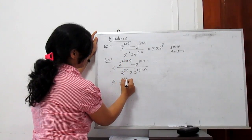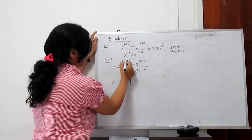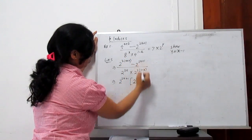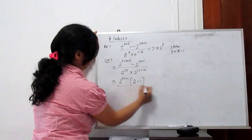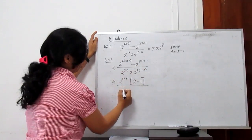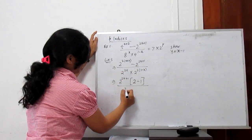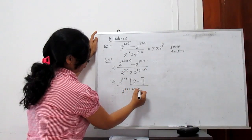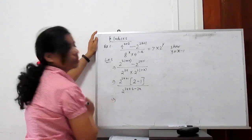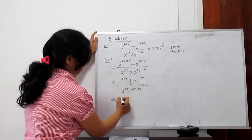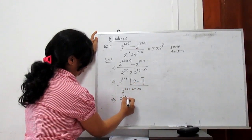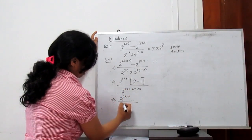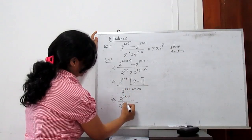Taking 2 to the power 2x plus 1 outside from the numerator: 2x plus 1 plus 1 gives 2x plus 2, so the 2 is accounted for. Everything goes to plus 1. In the denominator we have 2 to the power 3x plus 2 minus 2x. Solving: 2 minus 1 is 1, so we get 2 to the power 2x plus 1 upon 2 to the power x plus 2.